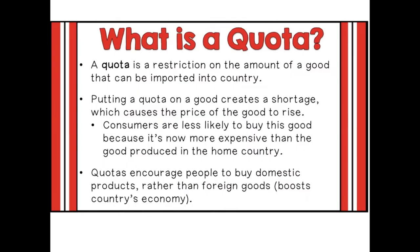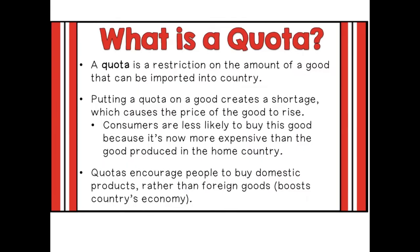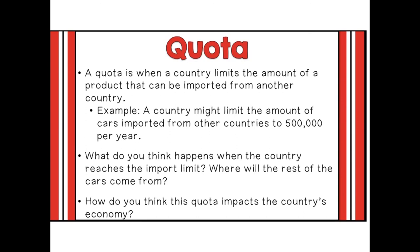A quota is a restriction on the amount of a good that can be imported into a country. Putting a quota on a good creates a shortage, which causes the price of the good to rise. Consumers are less likely to buy this good because it's now more expensive than the good produced in the home country. Quotas encourage people to buy domestic products rather than foreign goods, boosting the country's economy. For example, a country might limit the amount of cars imported from other countries to 500,000 per year. The European Union places a quota on the amount of steel that can be imported from certain countries — the effect is similar to a tariff, making steel harder to get and more expensive, helping EU steel producers sell more.